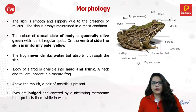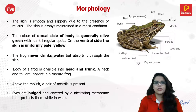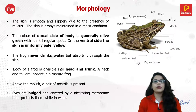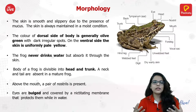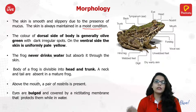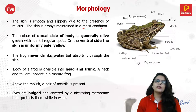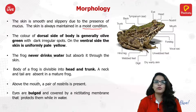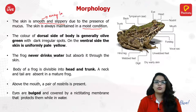Regarding morphology and external features, the skin of a frog is very moist, slippery, and mucus-covered. Their skin always maintains a moist condition because frogs actually breathe through their skin. Since they are both aquatic and terrestrial, when in water they use their skin to exchange gases. For this reason they must maintain a smooth and slippery skin to allow easy gas exchange.